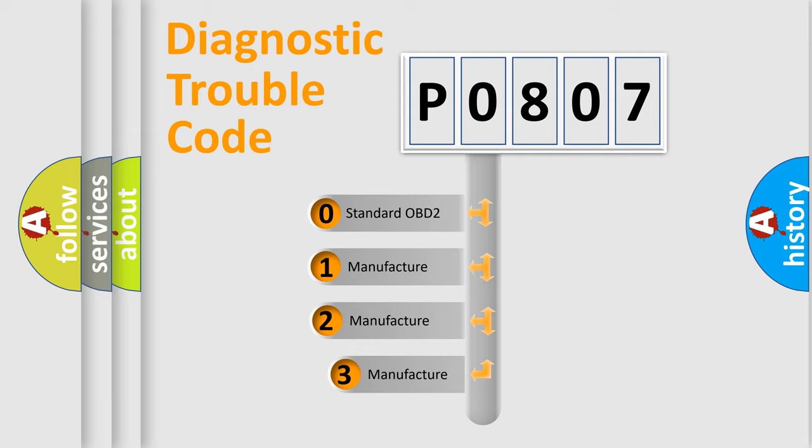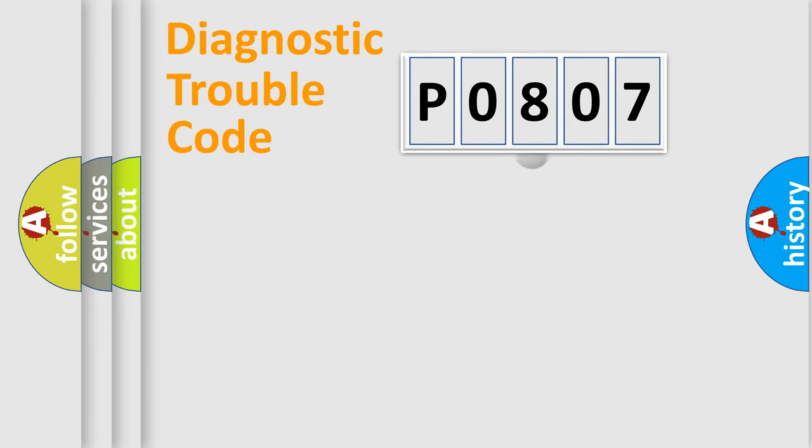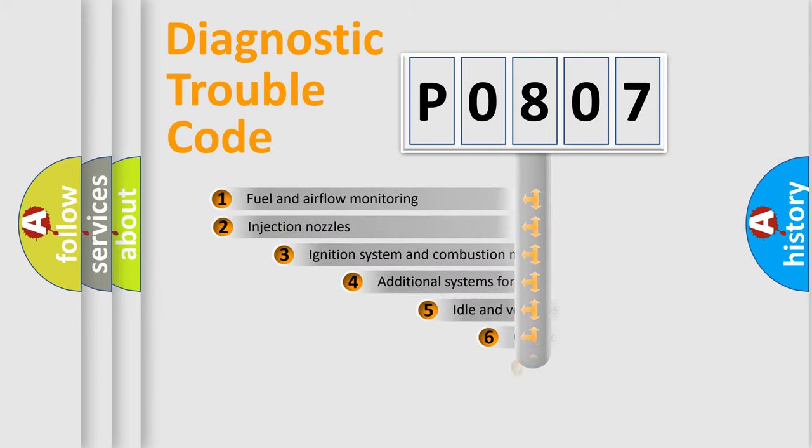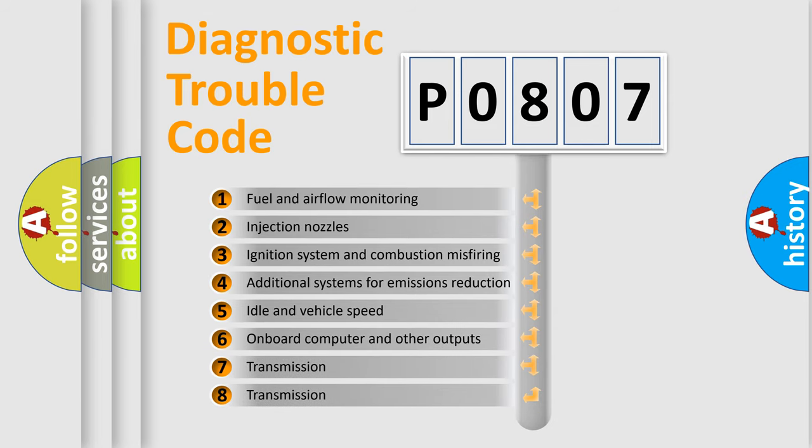If the second character is expressed as zero, it is a standardized error. In the case of numbers 1, 2, or 3, it is a manufacturer-specific error. The third character specifies a subset of errors.